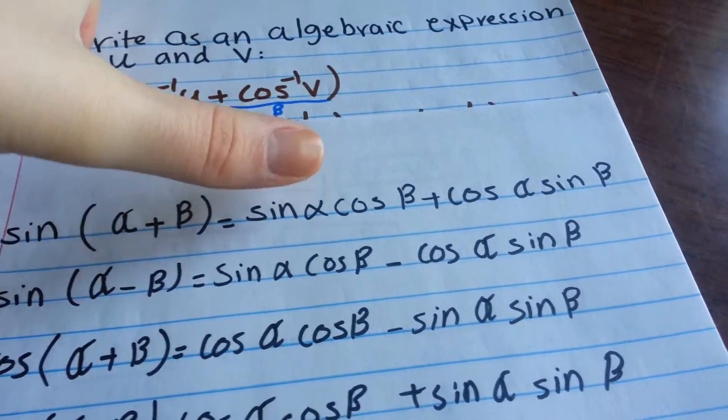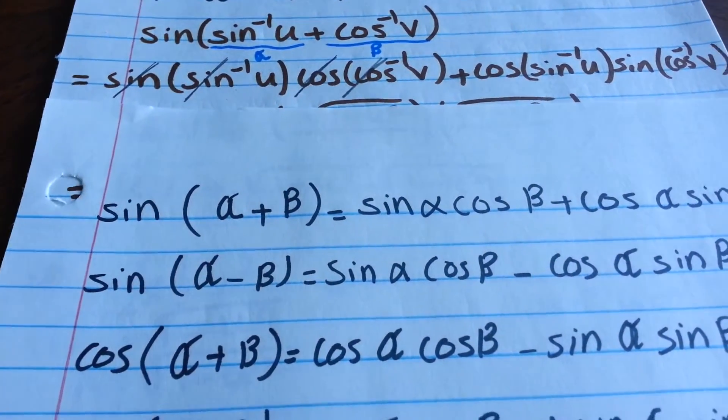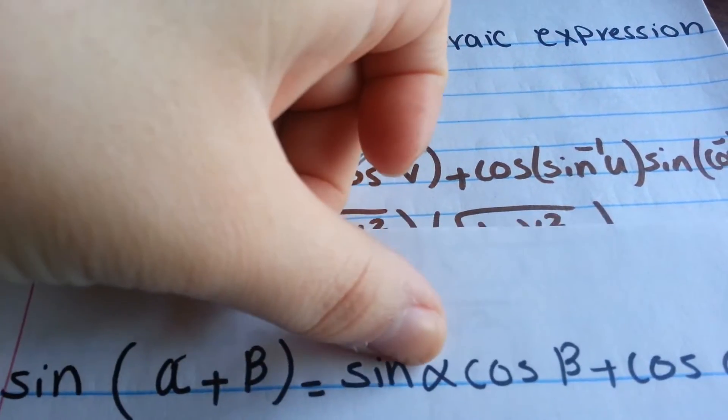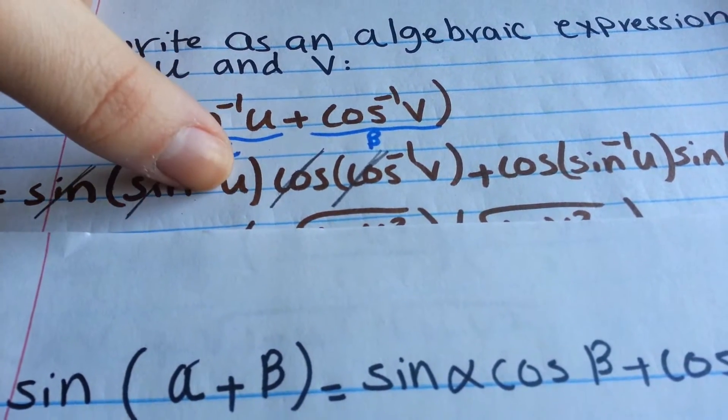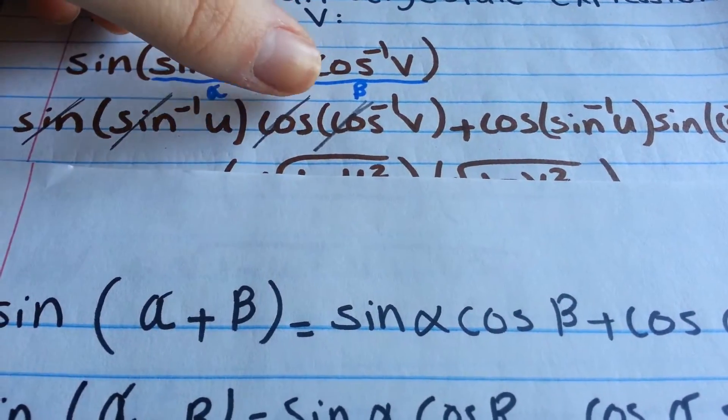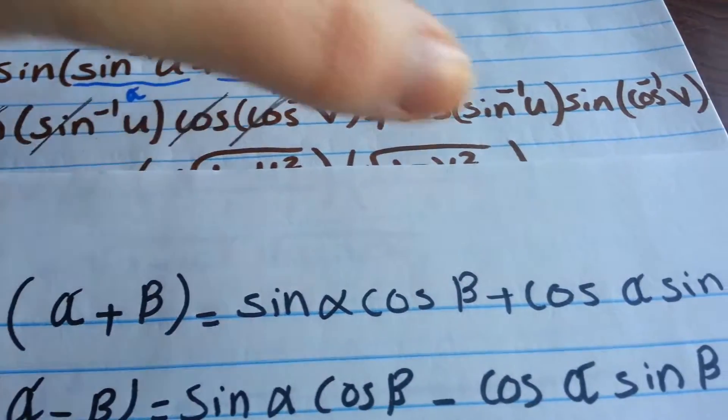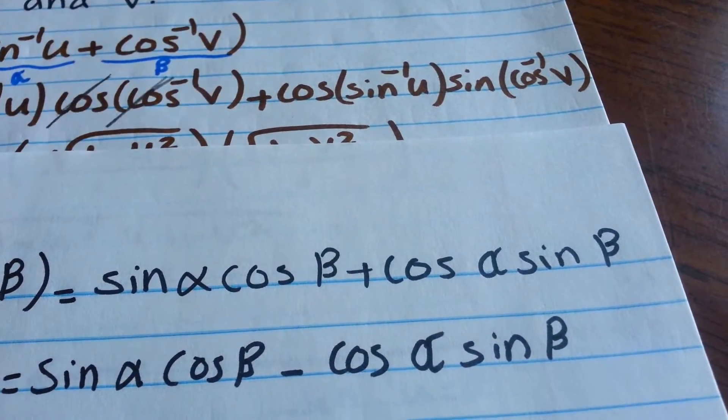First thing, write this down. So it would be sine, and then it says alpha. What is alpha? Inverse sine u. And then write cosine. What is beta? Inverse cosine v. And I put the sine right there, I'm just substituting.